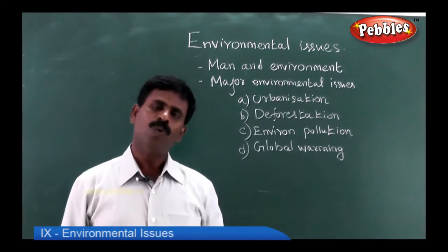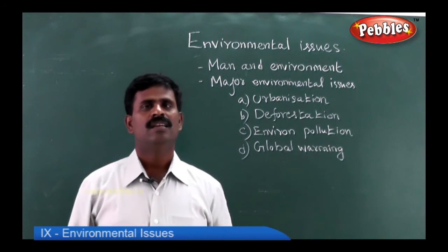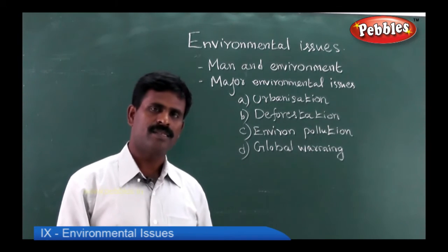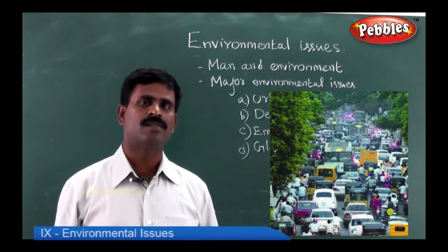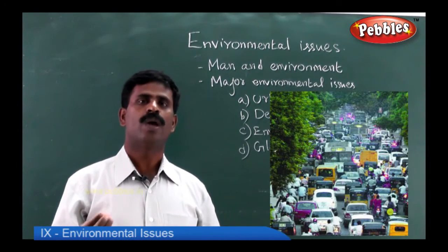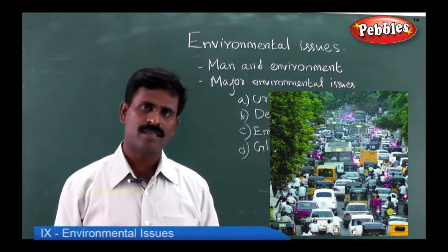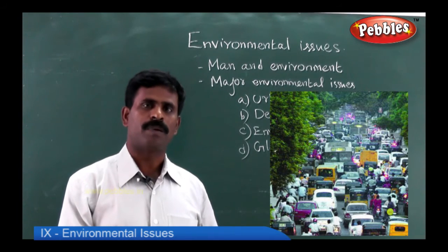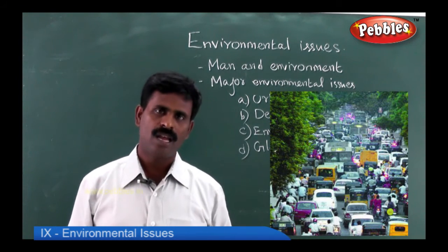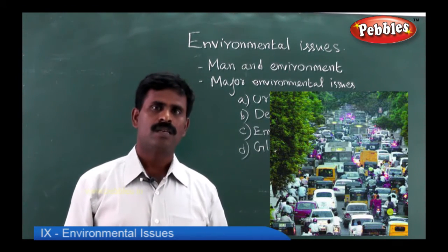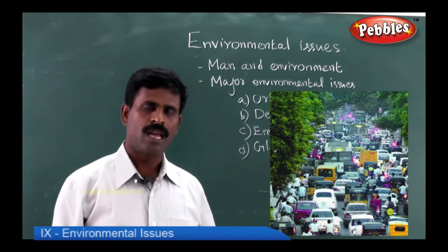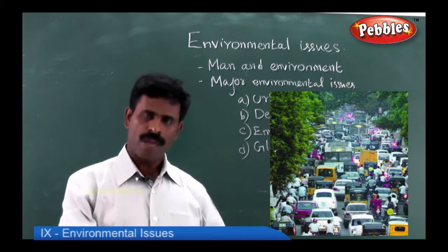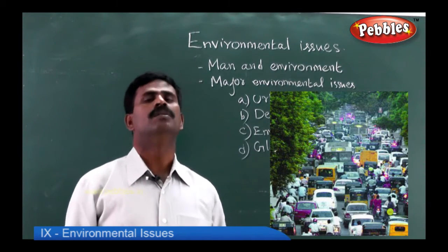What is urbanization? People migrating from their rural areas and settling themselves in an area where industry is located — they leave their traditional occupation of agriculture and take up industry-related jobs. Their concentration is more in an area away from their native land. This is called urbanization.